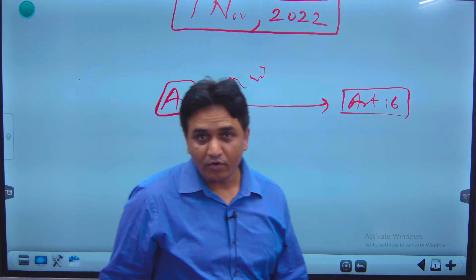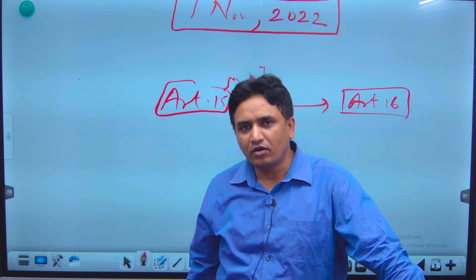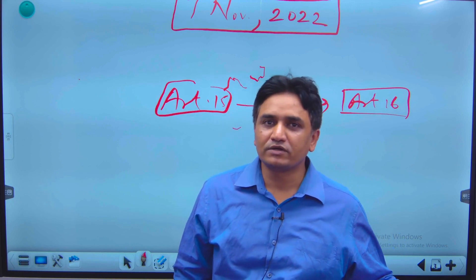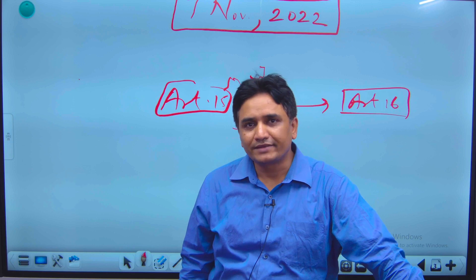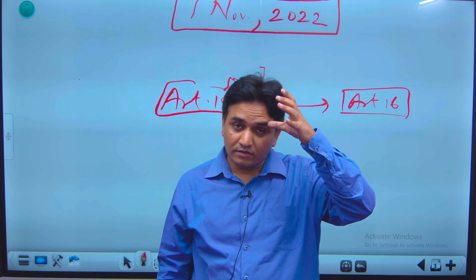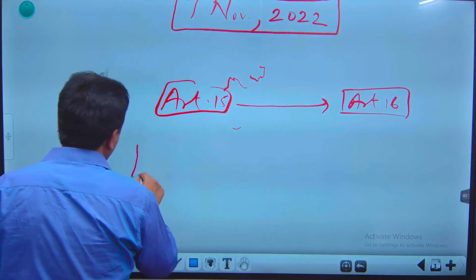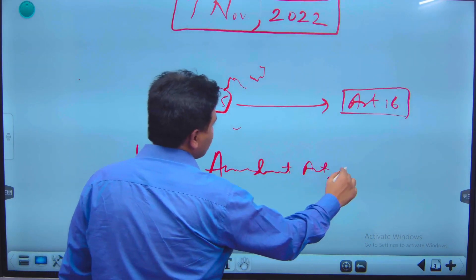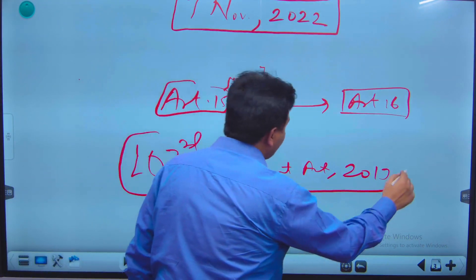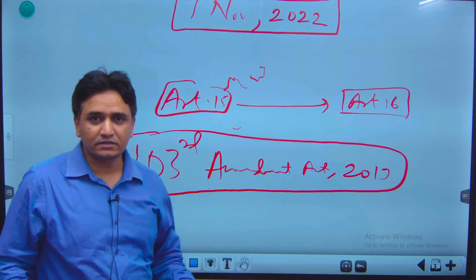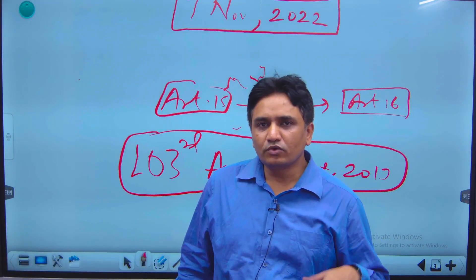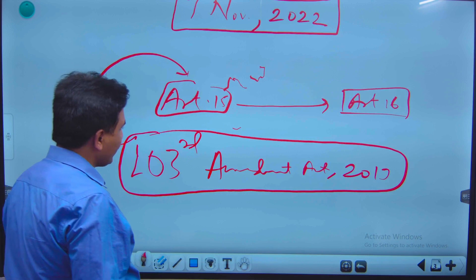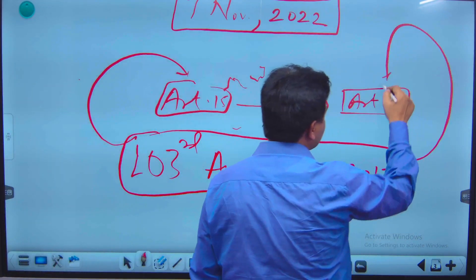Why are these two articles important? When we go through the history of this legal development on EWS, we find that the Parliament of India in 2019 brought one amendment to the Constitution — that is the 103rd Amendment Act 2019. Through this amendment, reservation was granted to EWS citizens.